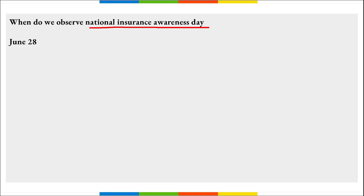National Insurance Awareness Day is observed on 28th of June to create awareness about the importance of insurance globally and why insurance is beneficial for individuals. World Refrigeration Day is observed on 26th of June. International Day Against Drug Abuse and Illicit Trafficking is also observed on 26th of June.